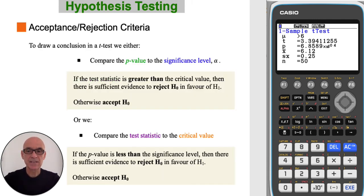Reminding you of the acceptance and rejection criteria: if the test statistic is greater than the critical value, or if the p-value is less than the significance level, then there is sufficient evidence to reject the null hypothesis, H0. Otherwise, we accept the null hypothesis.